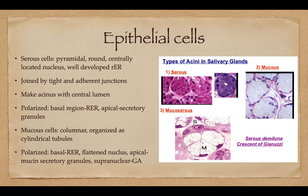The epithelial cells are the serous cells, which are kind of pyramidal and roundish. They have an eccentrically located nucleus and a well-developed endoplasmic reticulum. They're all joined with each other by tight junctions, and they make the acinus with a central lumen — they are polarized. On the basal region there's more rough ER, and on the apical end there are more secretory granules.